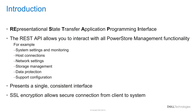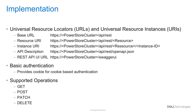As you can see, PowerStore REST API presents a single consistent interface to manage a PowerStore cluster and automate processes. SSL encryption allows secure communication between client and PowerStore cluster. REST API uses standard HTTP requests against the PowerStore management web interface. As the connection is SSL encrypted to protect the data including username and password, HTTPS is used.